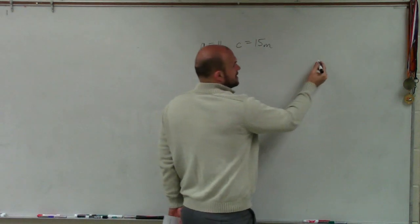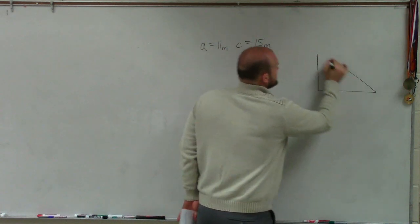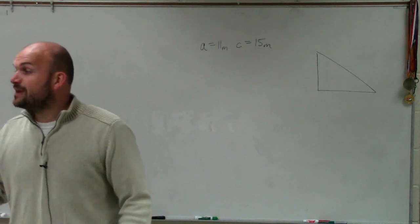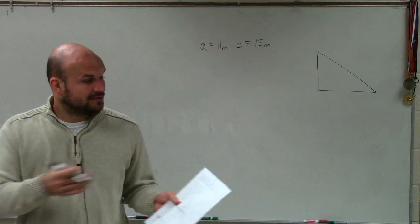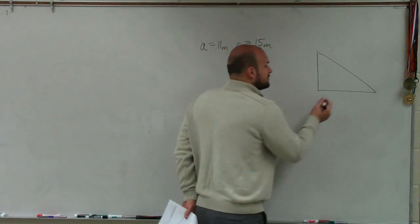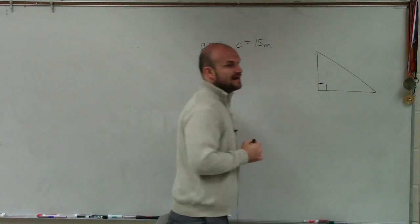So Malik, the one important thing when we're talking about using Pythagorean theorem is we need to make sure we have a couple of pieces of information. First of all, we have to make sure we have a right triangle. I showed you guys up there on that worksheet. You have to have a right triangle. And for us to have a right triangle, Taylor, we have to have a right angle.